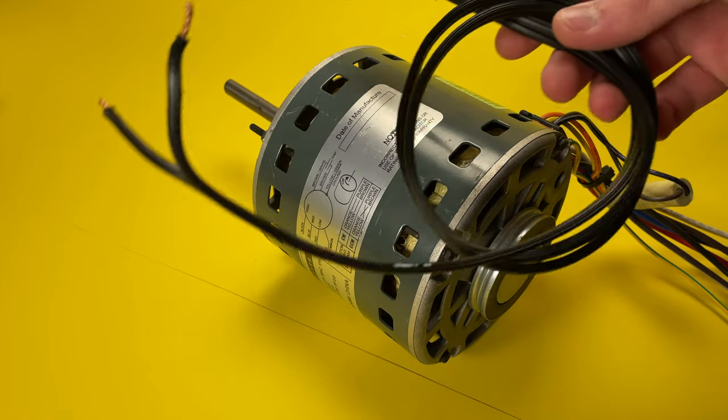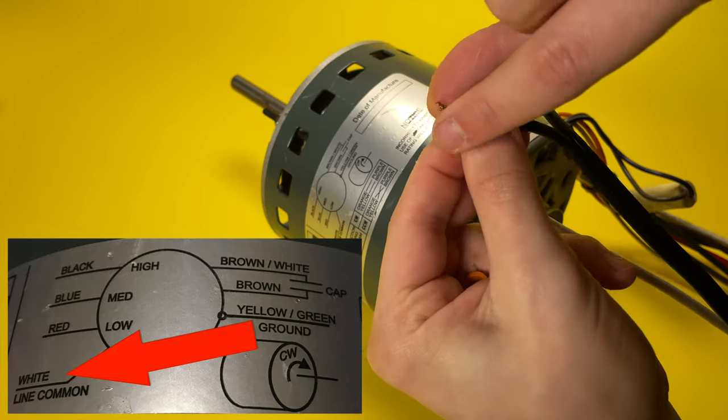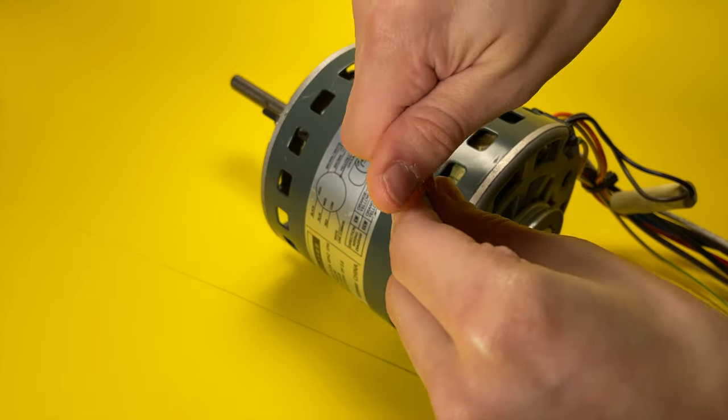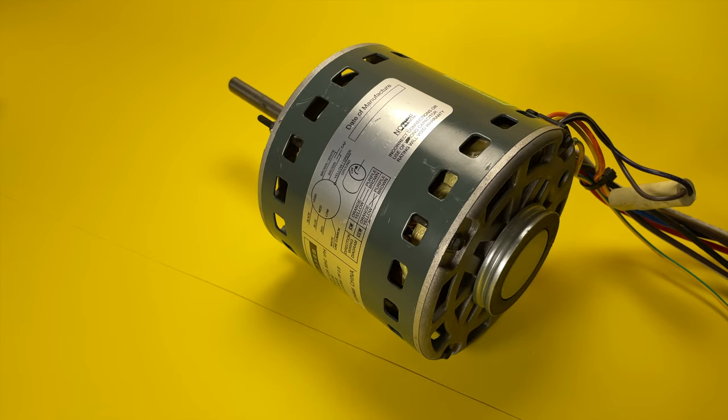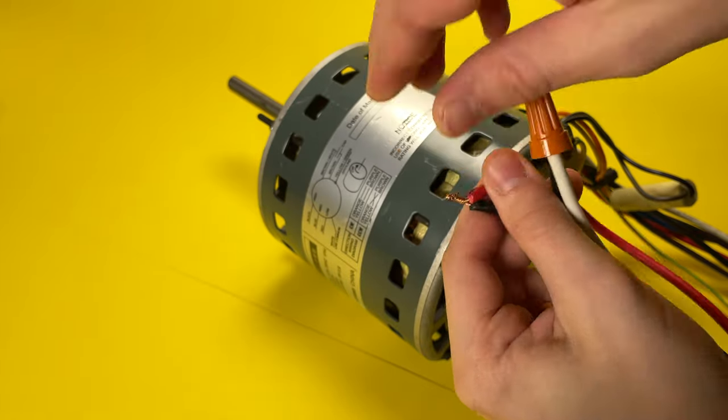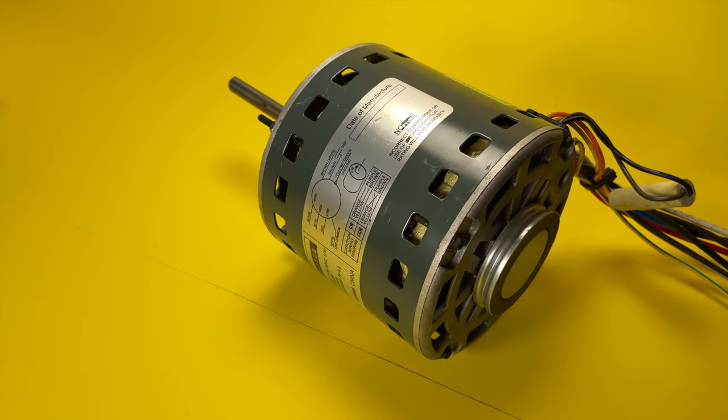So I took a two prong power cord and stripped the ends of it. I then hook up the common white wire to the hot side of my power cord. Then I protect it with the wire nut, of course. Then I hook the red wire up to the neutral side of my power cord. The reason I chose the low speed is just to make it a little bit safer. I also put a wire nut on this connection, too.